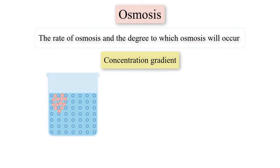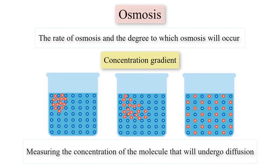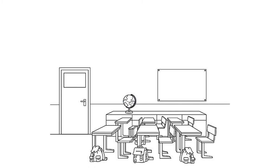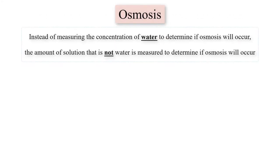Water flows from an area of higher water concentration to an area of lower water concentration. However, in most instances of diffusion, the rate and likelihood that diffusion will occur is measured by the concentration of the molecule that will undergo diffusion. For example, if the front end of the classroom has a concentration of 25 moles of perfume and the back end has 2 moles, it is reasonable to conclude the perfume molecules will diffuse toward the back. With osmosis, the diffusion of water is measured the opposite way — instead of measuring the concentration of water, the amount of solution that is not water is measured to determine if osmosis will occur.